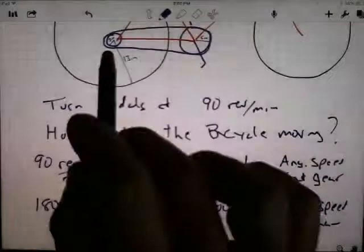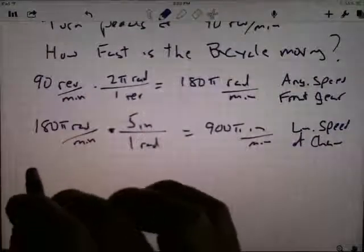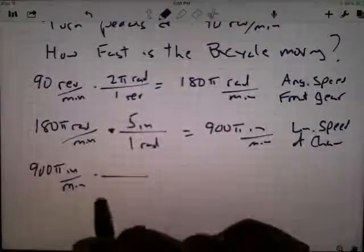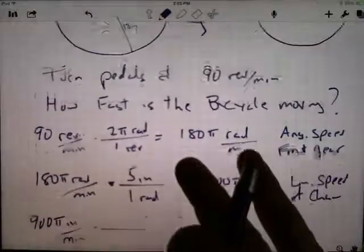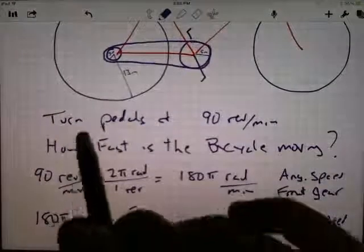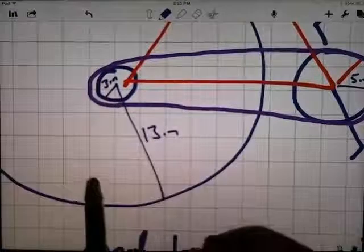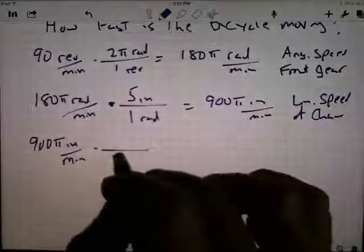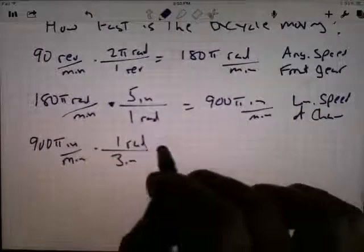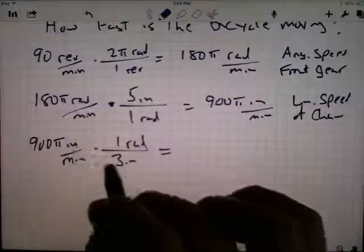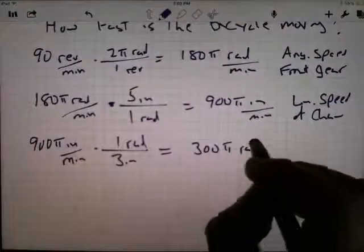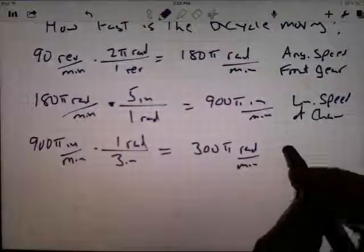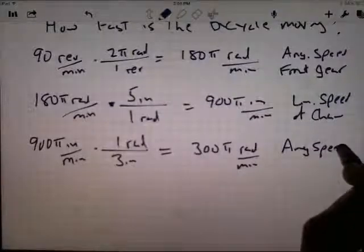Now I convert the linear speed of the chain into the angular speed of the back sprocket. The chain moves at 900π inches per minute. To convert linear speed to angular speed, I use the back gear's radius of 3 inches — meaning one radian of turn equals 3 inches of arc length. So 900π divided by 3 gives 300π radians per minute. The front gear was spinning at 180π radians per minute; the back gear is spinning at 300π radians per minute.